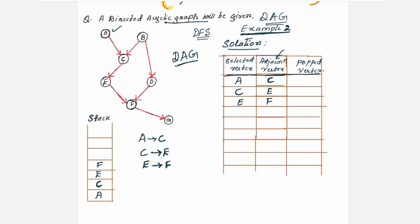From the graph, for F you have one neighbor that is G. You are selecting F and placing it in the selected vertex column, then checking its neighbors. You have G as seen in the graph. So for F, the adjacent vertex is G. Select G — that means you place it in the stack — and find G's neighbors. For G, there are no neighbors at all, so that becomes the dead end. The moment you see any vertex with no neighbor, you need to pop it out. The stack pointer is pointing to vertex G, so G will be popped out and placed in the popped vertex column.